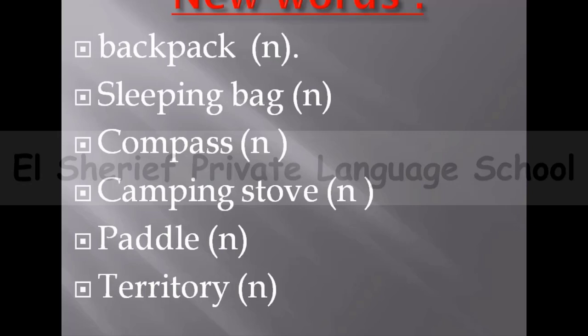Camping stove — it's a noun and it means a piece of equipment for cooking food. Paddle — it's a noun and it means a short pole with a flat blade at one or both ends that you hold in both hands and use for moving a small boat. Territory — it's a noun and it means land that is under the control of a country or ruler. For example: the writer is back on home territory with his latest novel.